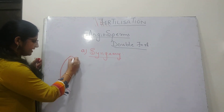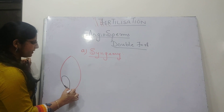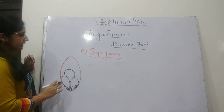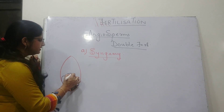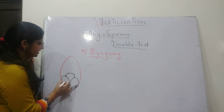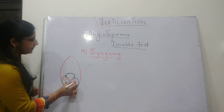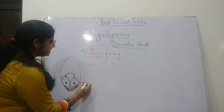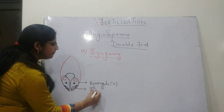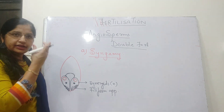Let me draw the embryo sac structure again. This is the embryo sac, the female gametophyte. At the bottom there are three cells called the egg apparatus, and among them the important female gamete is called the egg cell. The two other cells are called synergids. Each synergid has a nucleus at the front and a vacuole at the back. These synergids are haploid cells, and at the base of synergids there are finger-like projections called the filiform apparatus, which guide the pollen tube to enter into the embryo sac.